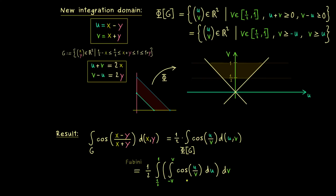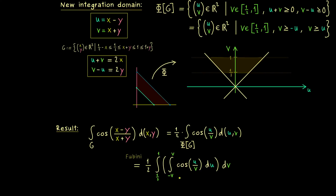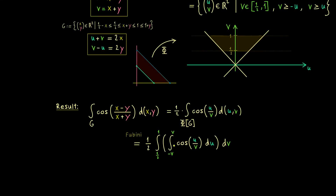We can easily solve the inner integral by finding an antiderivative of the cosine function. The antiderivative of cosine(u/v) with respect to u is v times sine(u/v) — the factor v appears because differentiating sine(u/v) with respect to u produces a factor of 1/v, which must be cancelled. We evaluate this antiderivative at u = v and u = minus v.